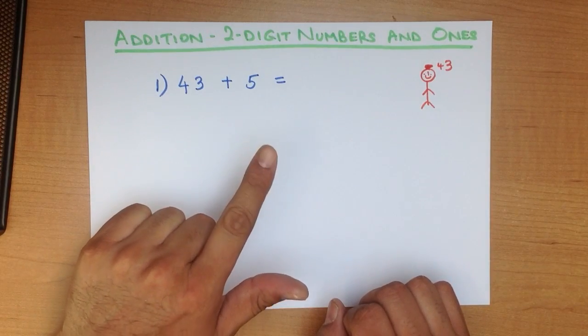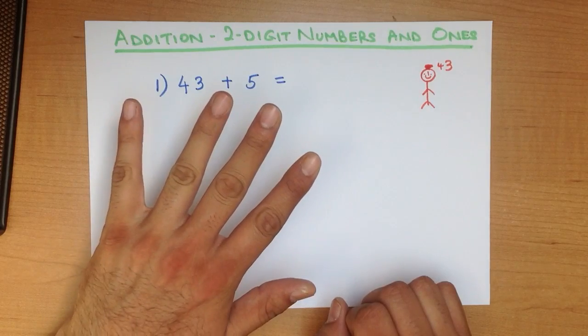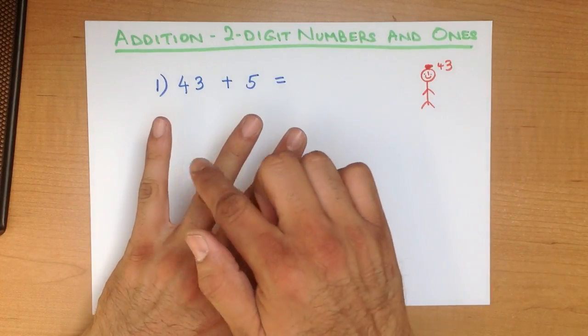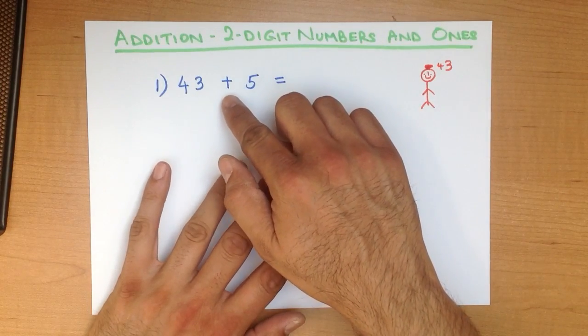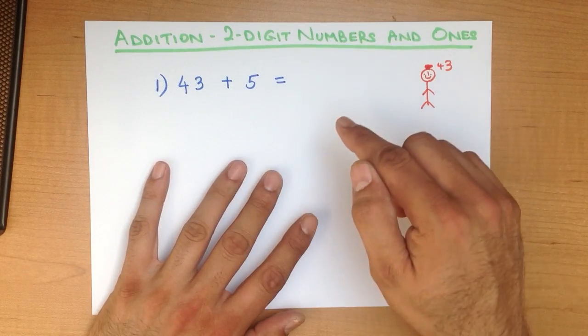1, 2, 3, 4, 5. There's 43 on my head. It's plus, so we are going to count forwards.